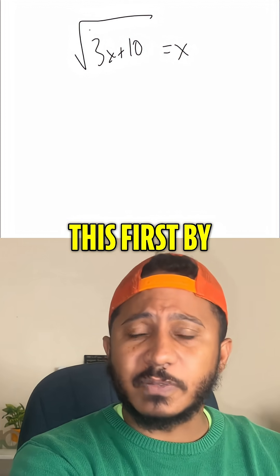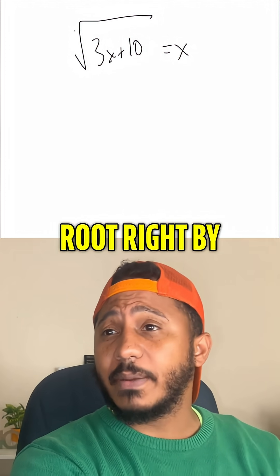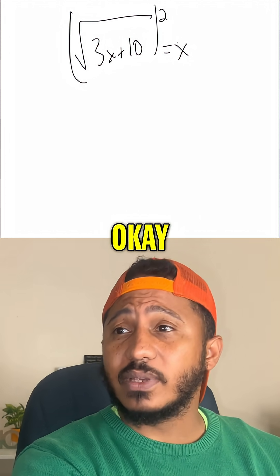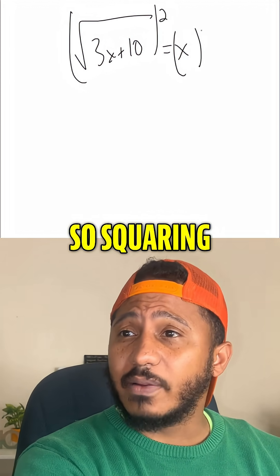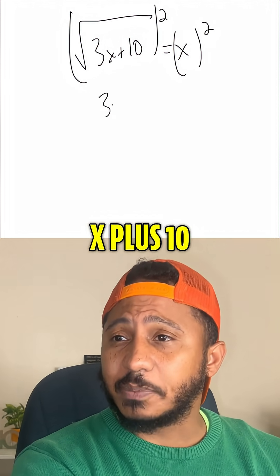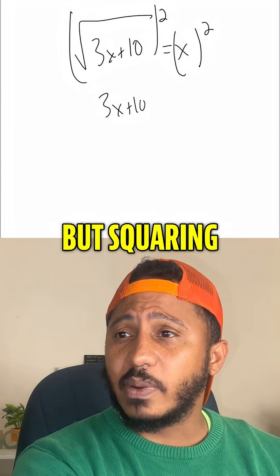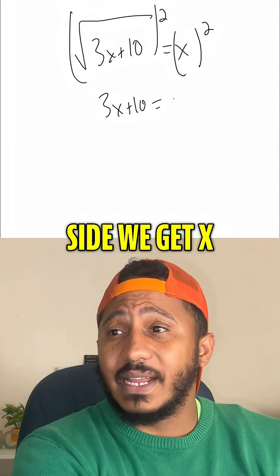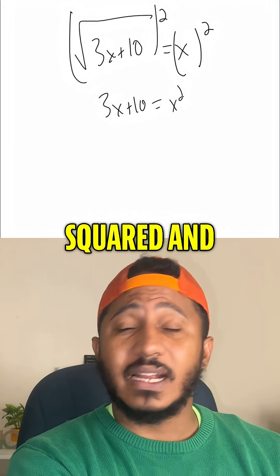How we solve this first is by getting rid of the square root, right, by squaring both sides. Squaring the left-hand side, we just get 3x plus 10. But squaring the right-hand side, we get x squared.